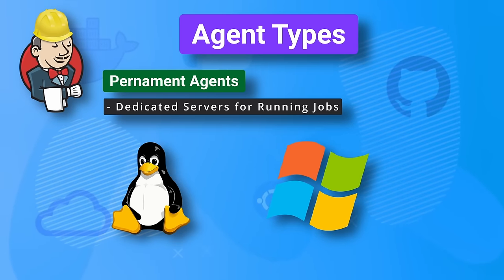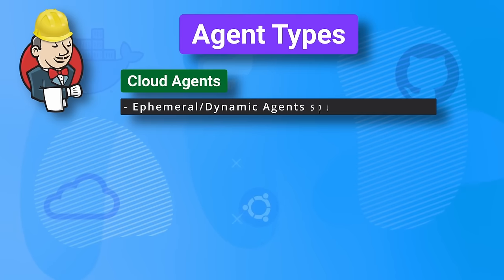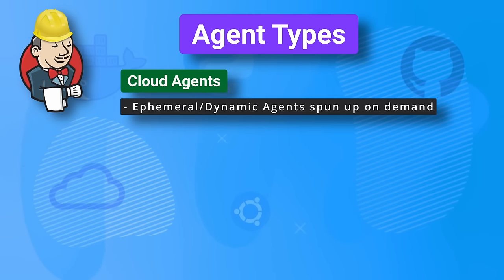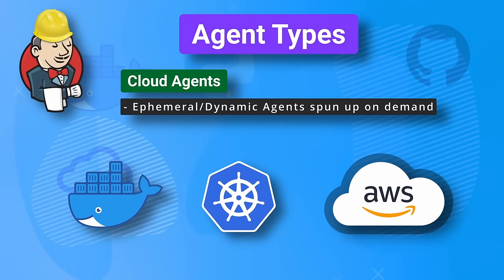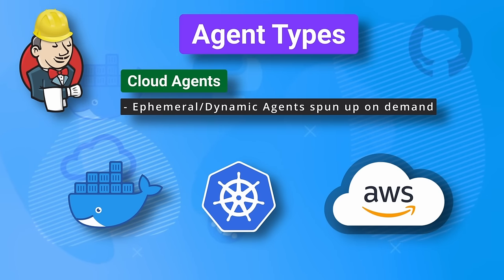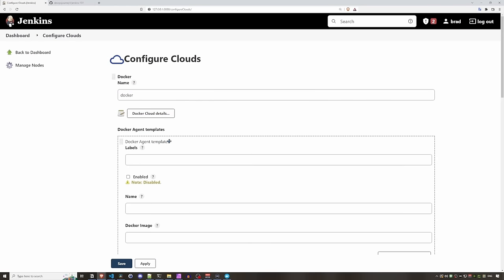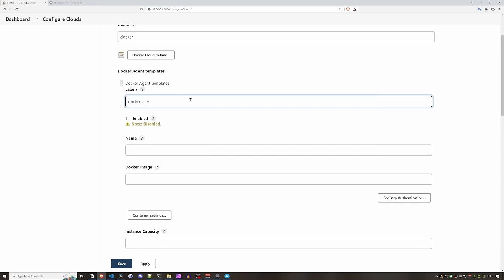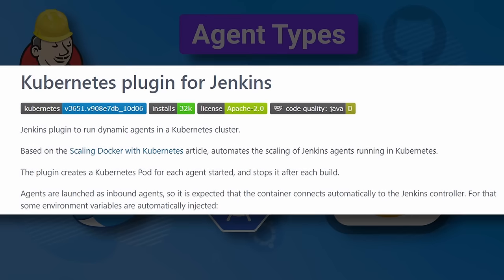There's another type of agent known as cloud agents, which are a much more popular choice in real-world environments. Examples include Docker, Kubernetes, and AWS Fleet Manager. In these scenarios, Jenkins can dynamically spin up agents based on agent templates you configure. In the lab portion of this video, I'll show you how to set up Docker as a cloud agent, so Jenkins jobs run in dynamically provisioned Docker containers.